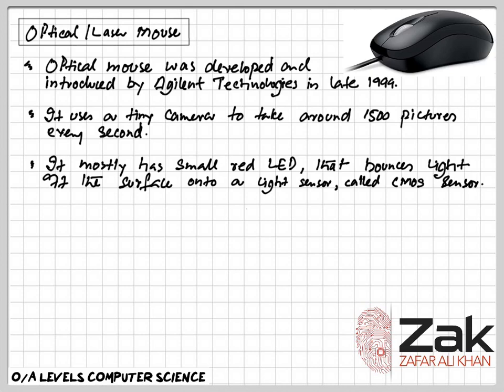CMOS, or complementary metal oxide semiconductor, is a technology used for constructing integrated circuit chips including microprocessors, microcontrollers, memory chips like BIOS, and other digital logic circuits. CMOS technology is also used for analog circuits such as image sensors like in the optical mouse, data converters, radio frequency circuits, and highly integrated transceivers for many types of communications.